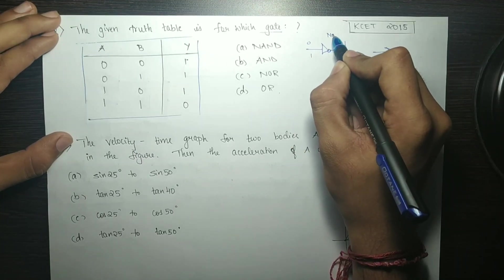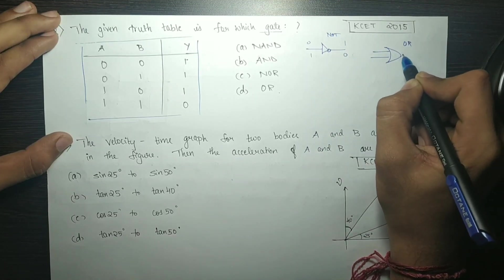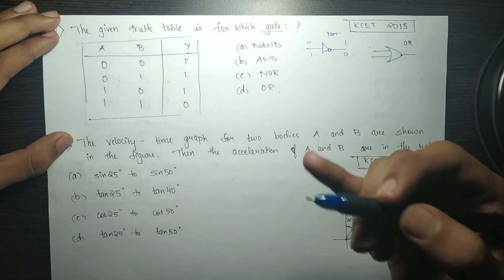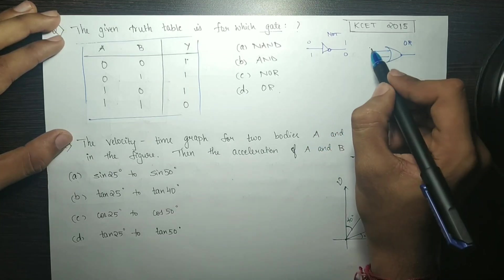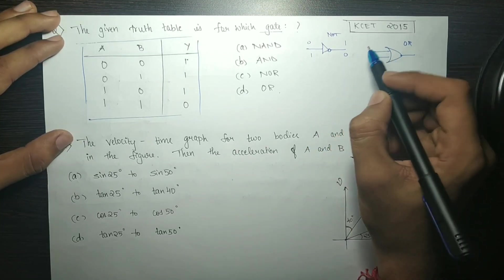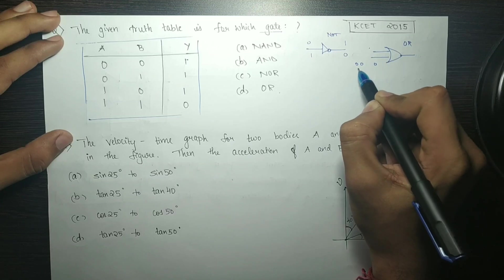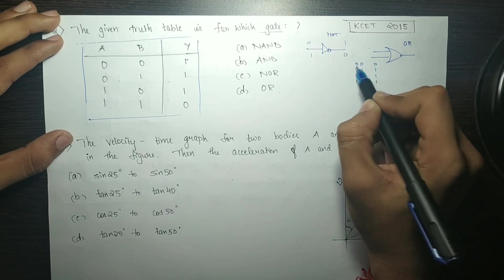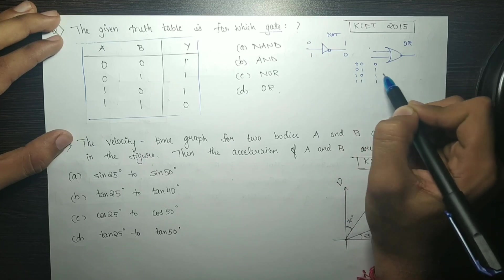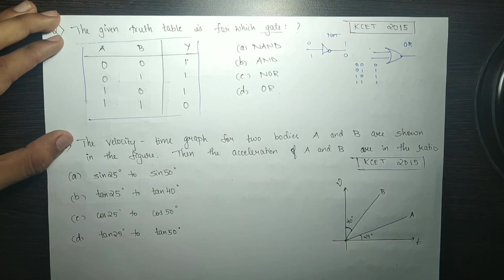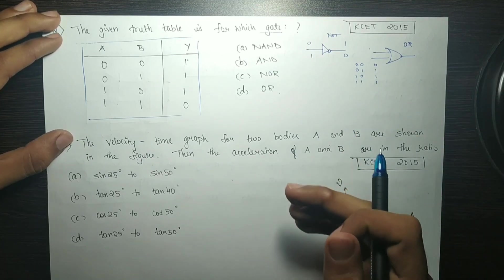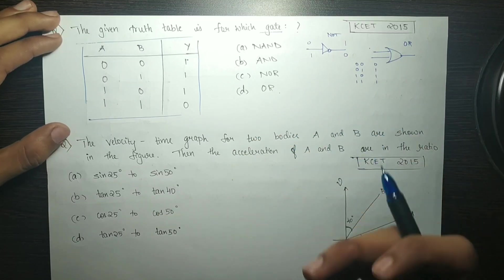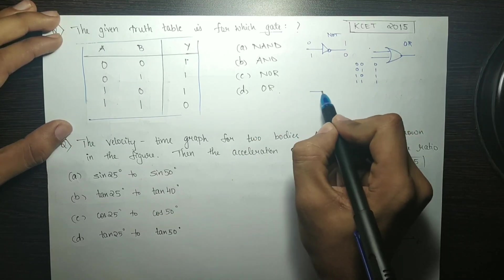This is NOT, this is OR. If you want to add, it will be logical addition. Logical addition gives OR gate truth table values. Two statements are true. The final statement is true. That is NOT AND.